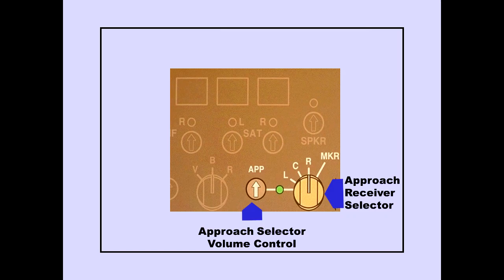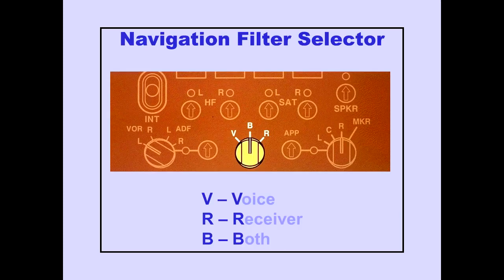The approach selector is used to select the left, center, or right approach receiver or the marker beacon. The receiver selector allows the selected approach receiver or marker beacon to be monitored. A navigation filter selector allows monitoring of V (voice only), R (receiver identifier only), or B (both voice and identifier) information from the selected navigation receiver.